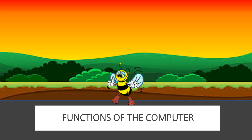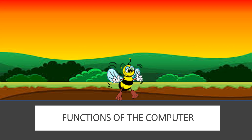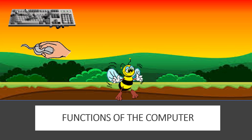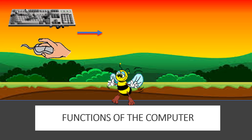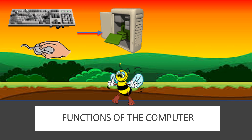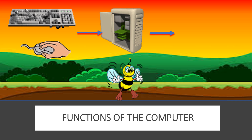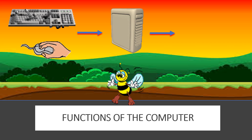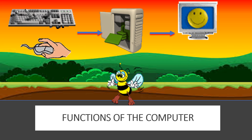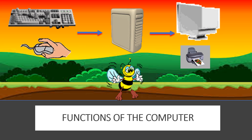Functions of the computer: Input or give information to the computer using keyboard or mouse. Store the information in the CPU and process the information. Retrieve the processed information from the CPU. Display or output it in the monitor, or print the information using a printer.